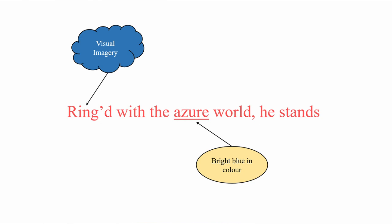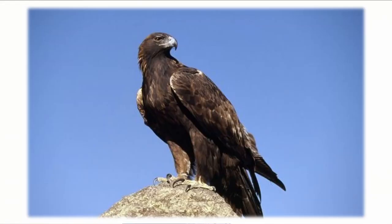'Ringed with the azure world he stands.' The eagle is surrounded only by the bright blue sky — azure means bright blue in color. This is visual imagery. You can see in the picture how this bird is very proudly perched there, alone, like a king surrounded by his kingdom.